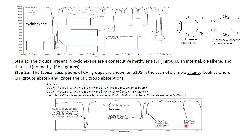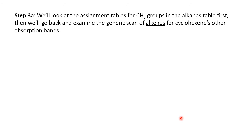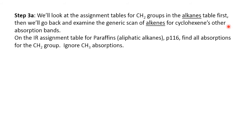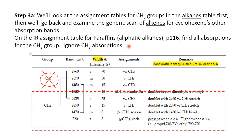In cyclohexene, we would expect to see the absorption at 720 wave numbers due to four or more methylene groups rocking, and that would be just about there. Step 3a: we look at the assignment tables for methylene groups on the alkanes table, page 116. On the IR assignment table for paraffins — aliphatic alkanes — you'll find all the absorptions for the methylene group; ignore the methyl group. Here are the absorptions: 2925 and 2850 for the asymmetric and symmetric methylene stretches; 1470 for the symmetric scissor bend; and 720 for four or more rocking methylene groups.